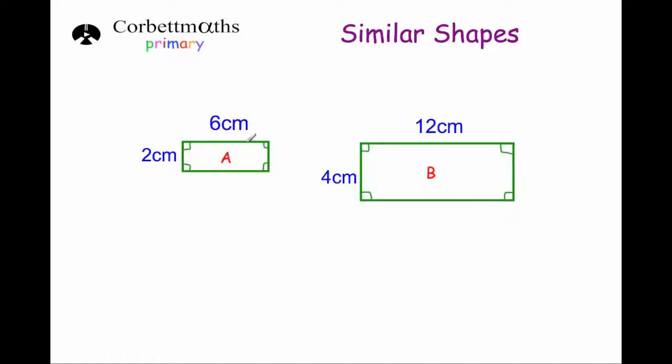As you can see, all the angles are right angles, but the length is two times larger for rectangle B than in rectangle A, and the width is two times larger.